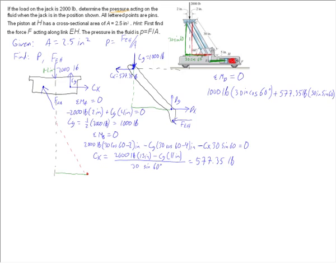Go ahead and solve for FEH. Put FEH on the other side, making it positive. It's going to be equal to 1,000 times 30 cosine of 60 plus 577.35 times 30 sine of 60, all over 5. Okay, so our FEH equals 6,000 pounds.